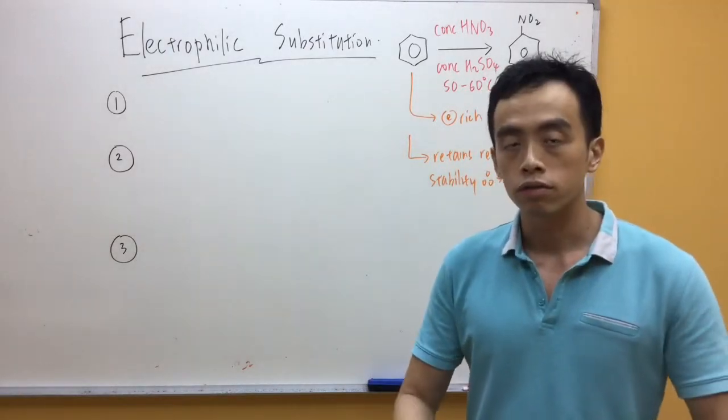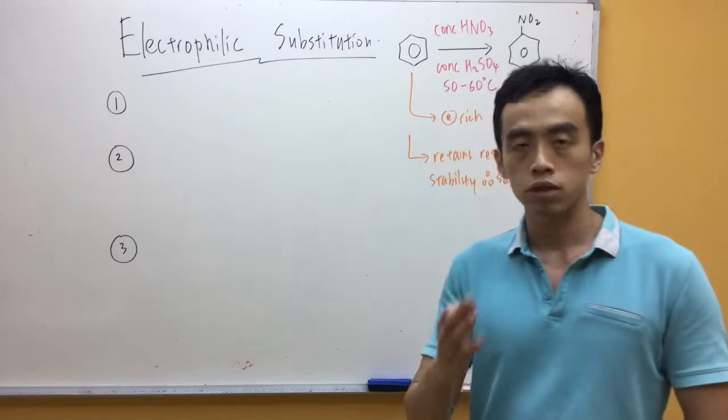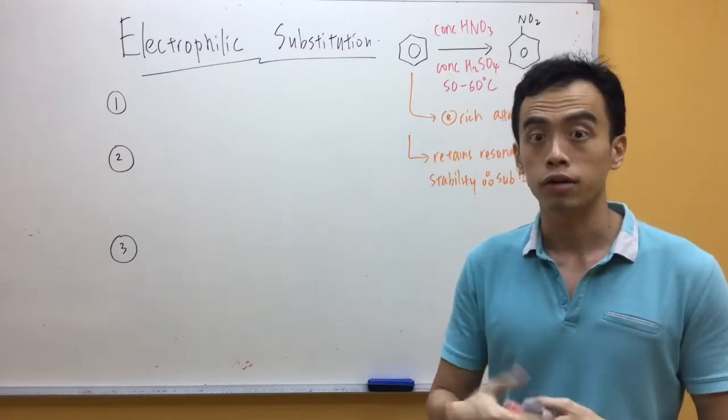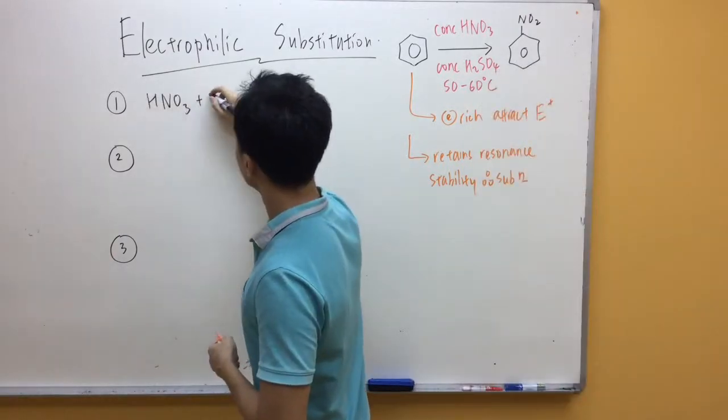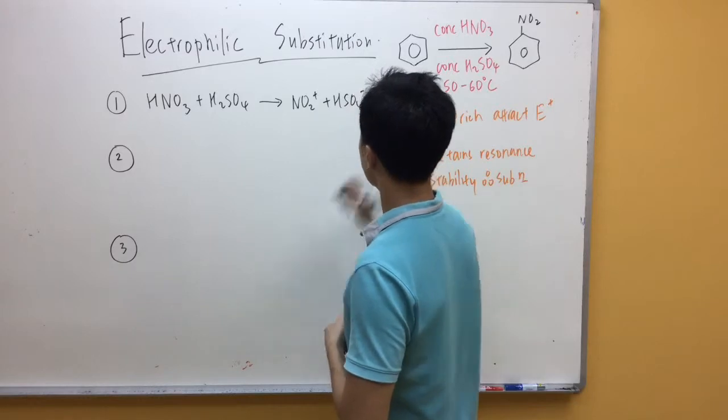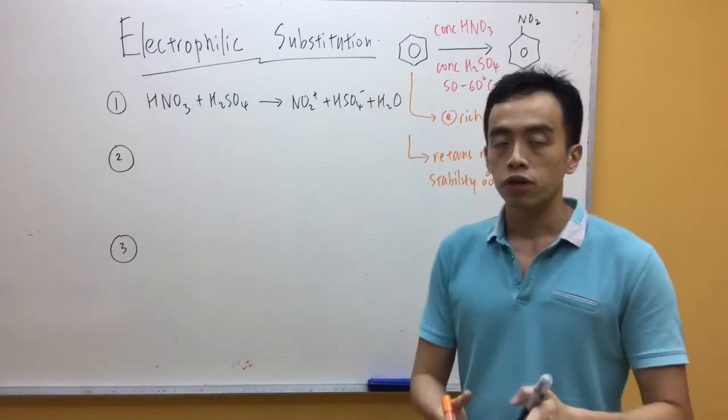Now, the mechanism for electrophilic substitution is pretty straightforward. There are only three steps. The first step involves the generation of my electrophile.